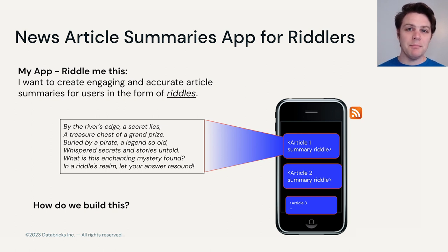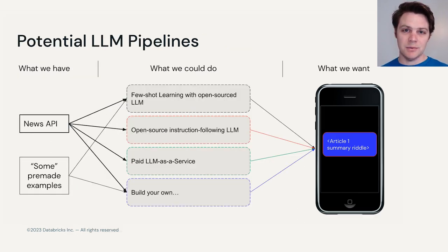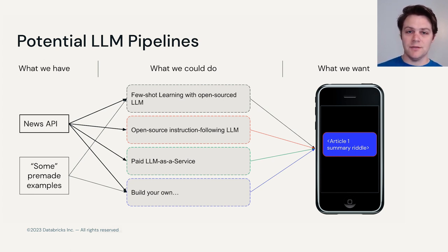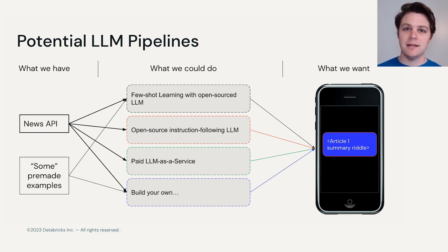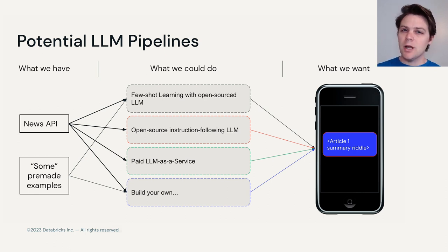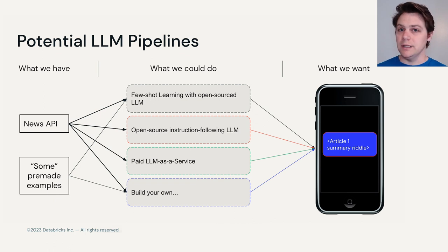Let's think about how we might build this using the tools that we have available. We have a number of different potential LLM pipelines. We'll have an API connected to some sort of news outlet so that we can get daily articles of what's going on around the world. And we might have some pre-made examples written by either us or people that we know are good at writing riddles from news articles. We don't have too many samples, but we've got enough to maybe do some few-shot learning later on.